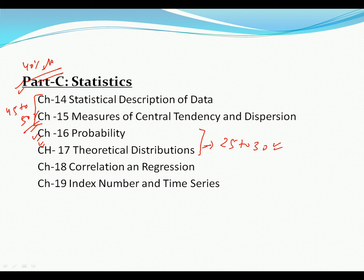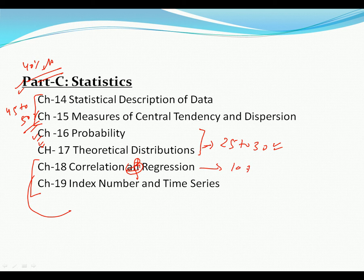Remaining chapters are Chapter 18, which is Correlation and Regression, and Chapter 19, which is Index Number and Time Series. These have 10 to 15% and 10 to 15% weightage respectively.